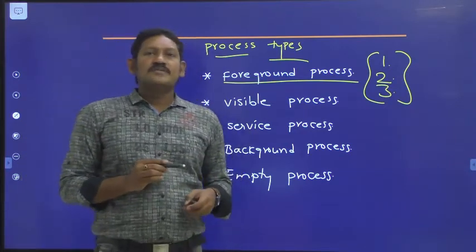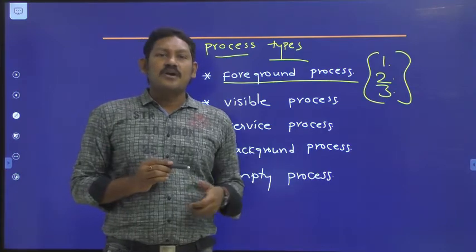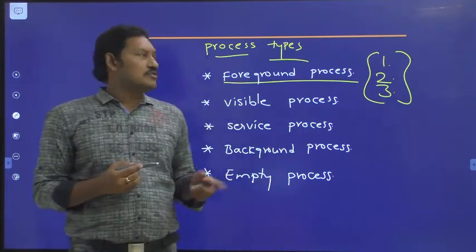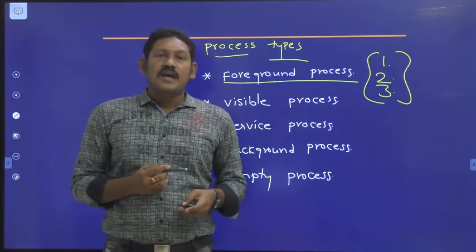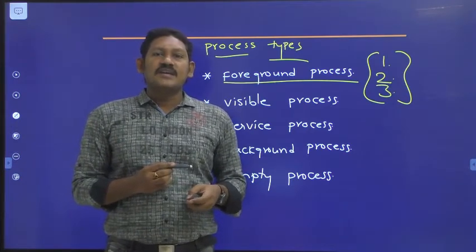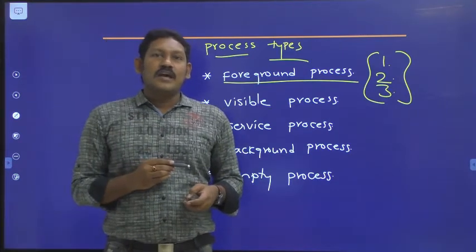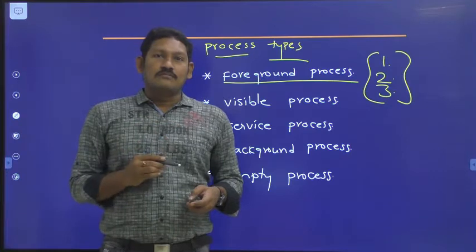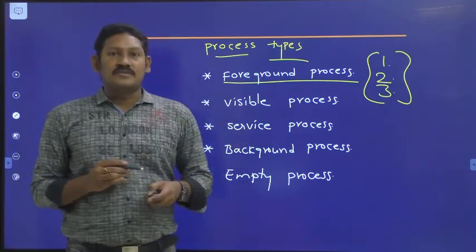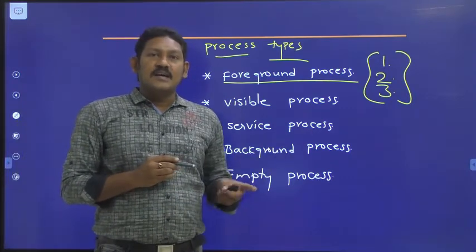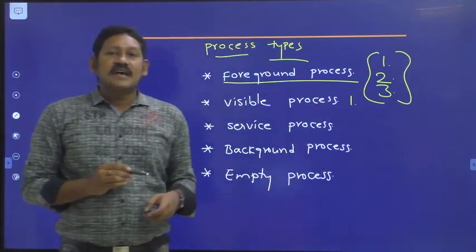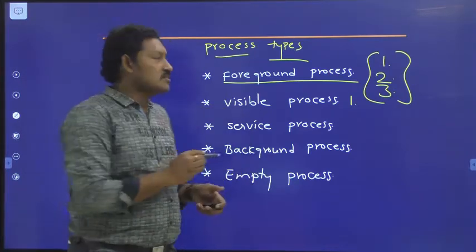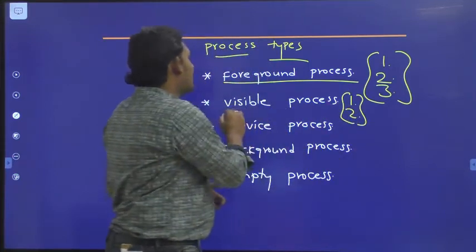Coming to the visible process — a process is considered a visible process if any one of the conditions is met. First, if it is running an activity that is visible to the user on screen but it is not in the foreground. Second, if it has a service that is running as a foreground service using startForeground(). If it satisfies any one of these conditions, we call it a visible process.